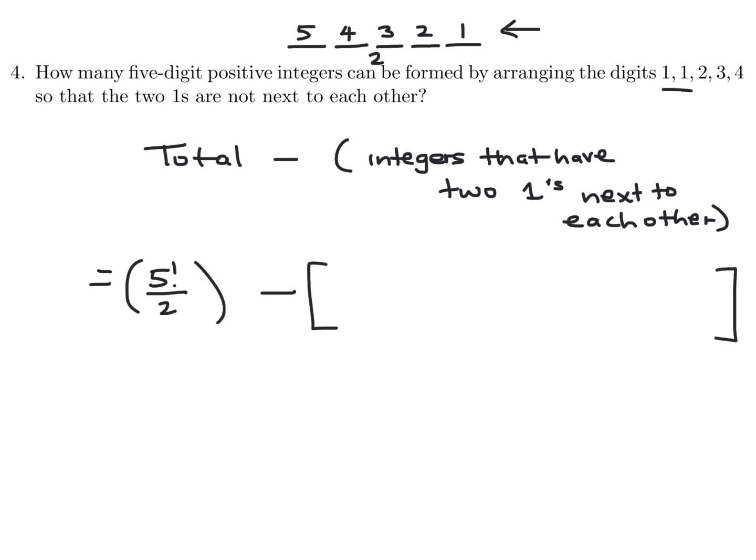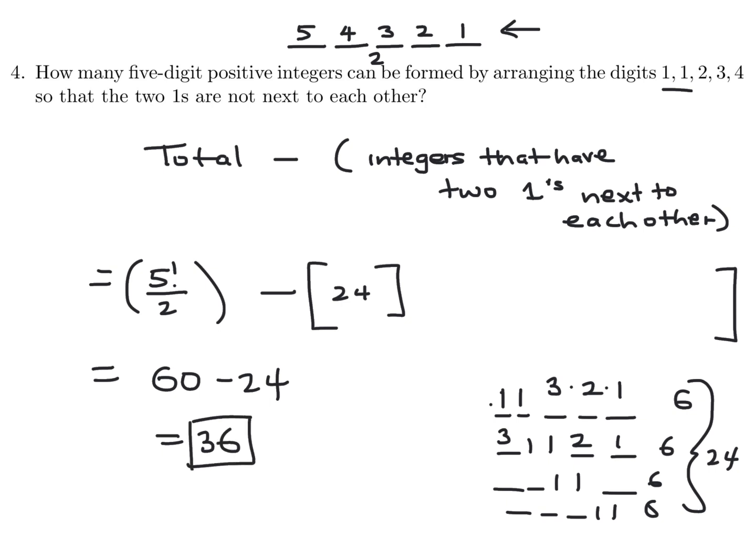And then the number of integers that do have two ones next to each other. I can do that manually. It's going to be something like 1, 1, and then three numbers. Or 1, 1, and then like that, like you're just shifting it over. Or 1, 1 with three numbers in front. So each of these, there's three choices here, two choices here, one choice here. So that's 6. And the same story for all of these, 6, 6, 6. So this is 24. And I think that's it. So 5 factorial, I believe, is 120. 120 divided by 2 is 60. So there's 60 minus 24. And that is 36. So 36 is the answer to the question.